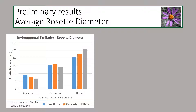We are still in the process of collecting data at these gardens. Here I'm presenting preliminary results related to the average rosette diameter of Machaeranthera canescens. The main question is whether plants whose area of origin was environmentally similar to a particular garden would experience higher performance in that garden. The blue bars represent plants from a seed collection site environmentally similar to Glass Butte, orange bars represent plants similar to Orivada, and gray bars represent plants similar to Reno. This figure shows that plants from a site environmentally similar to a particular garden grew larger — had a larger rosette diameter — in that garden, perhaps indicating higher performance.